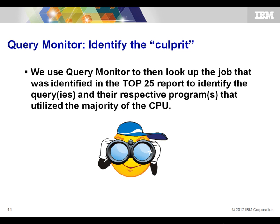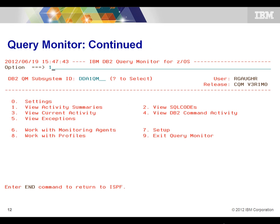Query Monitor identifies the culprit. We can quickly go in there and identify the query of the respective program or programs using the majority of CPU or doing the highest I/O consumption. On the mainframe version, which is just as easy to use as the PC version, we go into Query Monitor and can see various options — viewing events, programs that obtained a bad SQL code, and finding the SQL that incurred the problem. We use option one, viewing the activity summary, and can drill down to the SQL statement within a minute or two.